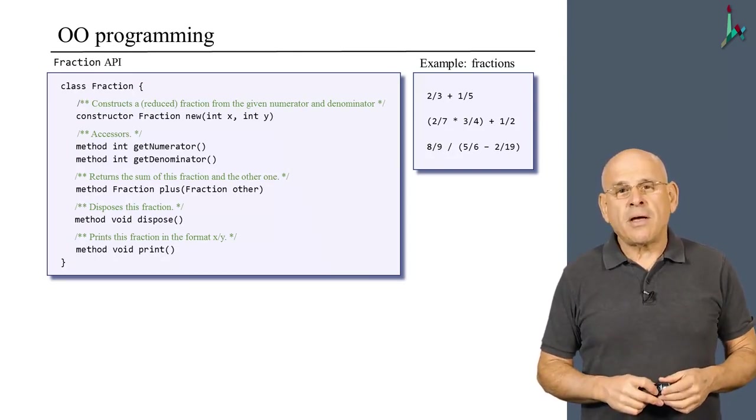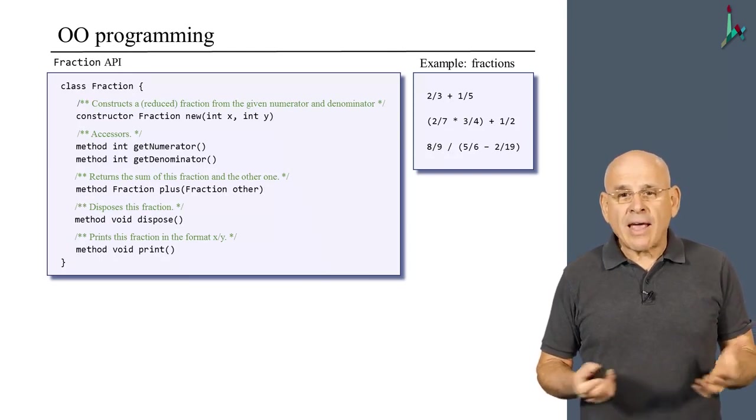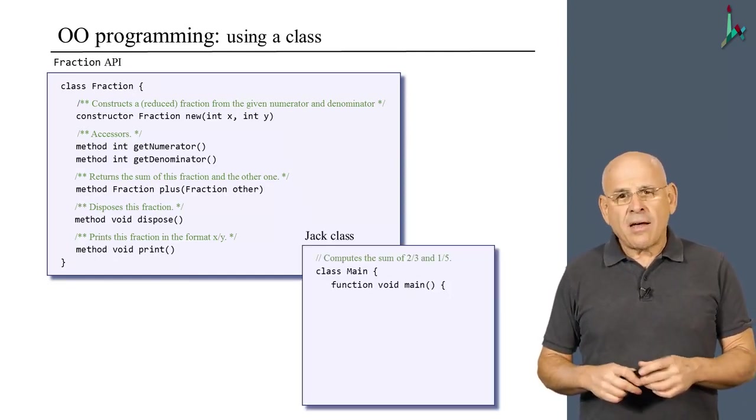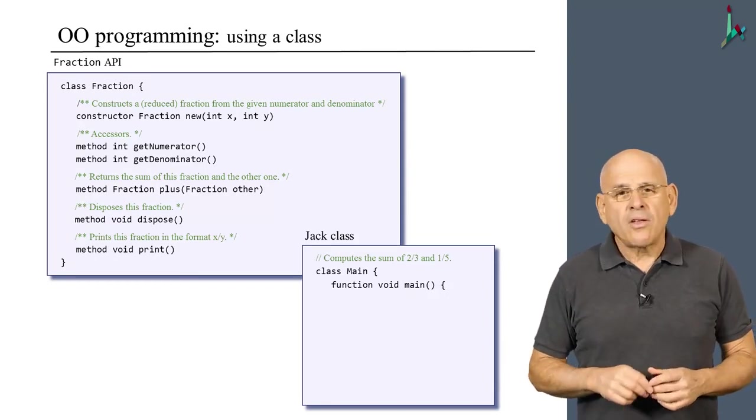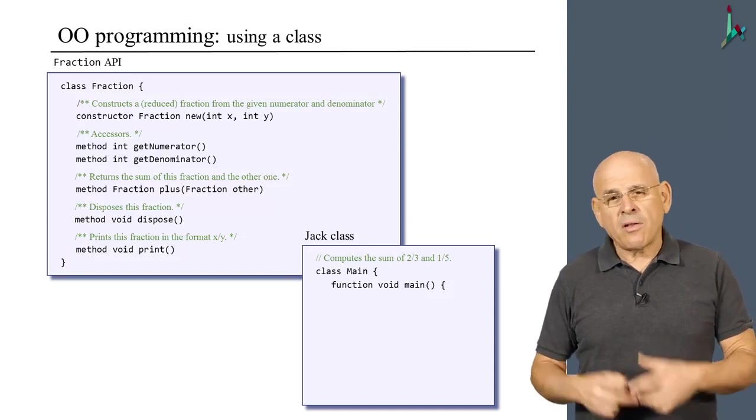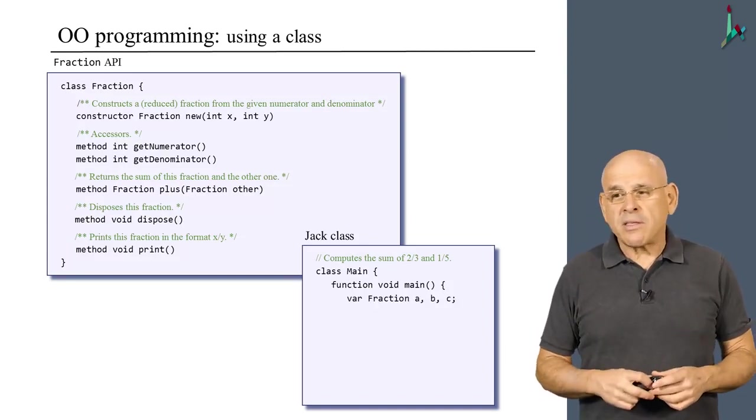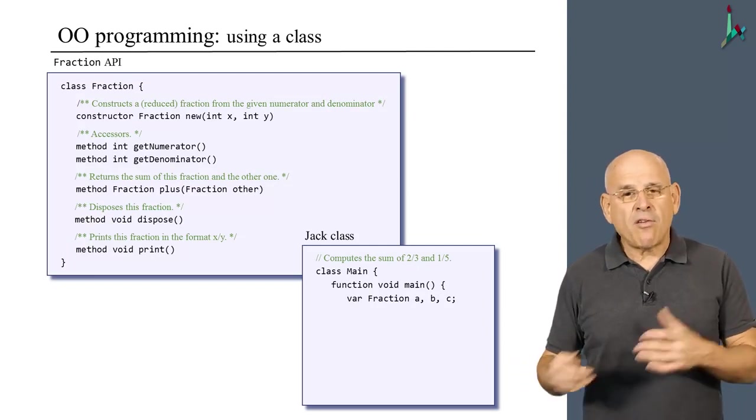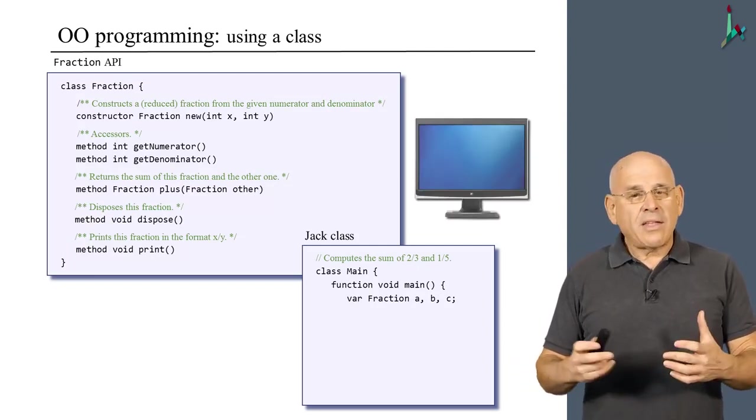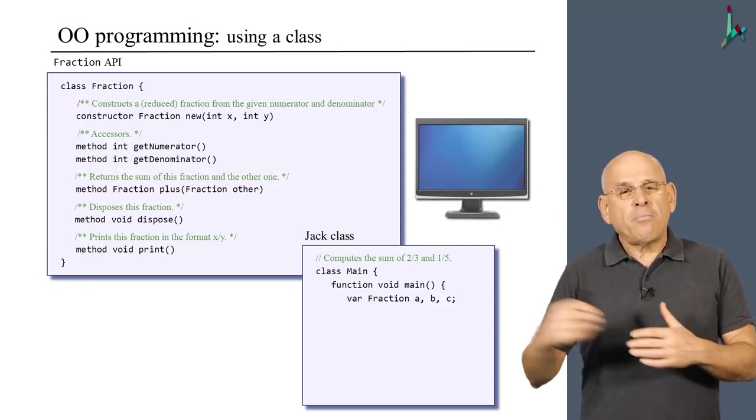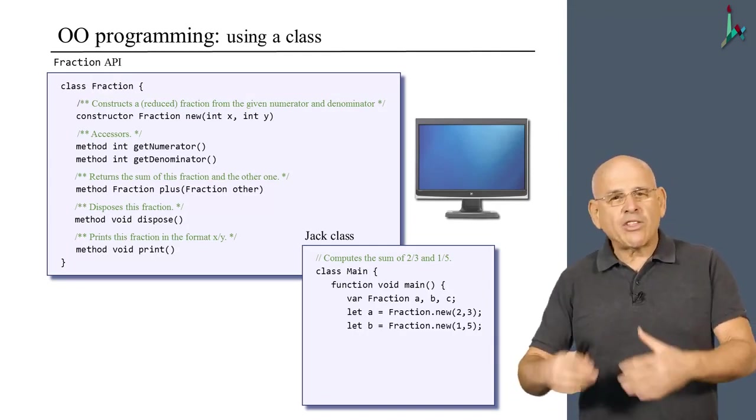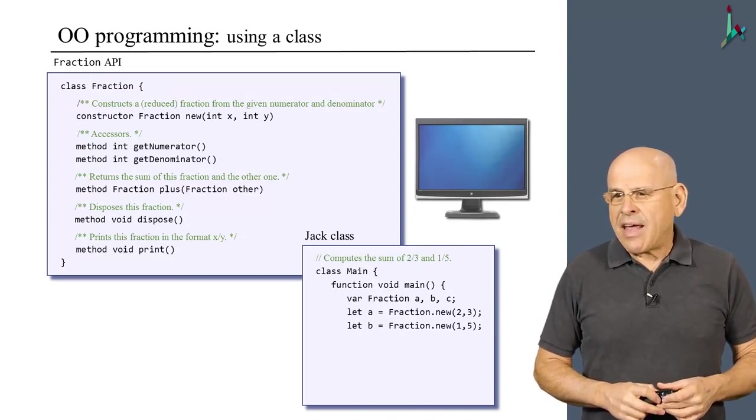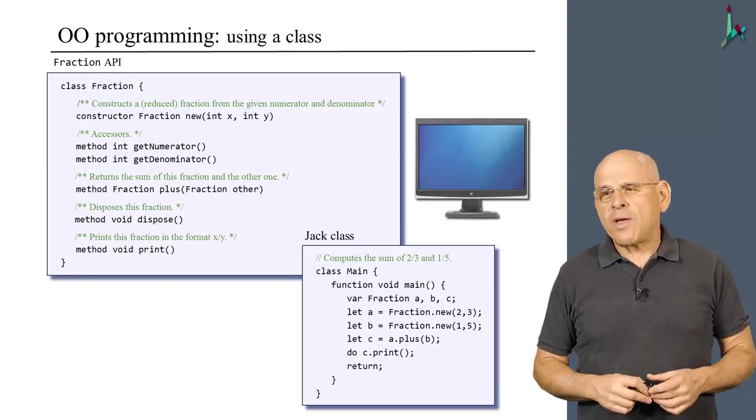All right, so how do you use this API? Well, you need to write some client code. And here's an example of some client code which exists in a separate Jack class. And this program here seeks to add up two-thirds and one-fifth, and it does it as follows. First of all, it creates three pointer variables, or reference variables, or object variables, any one of these terms is correct, a, b, and c, of type fraction. And then it creates two fractions, a and b. A points to the fraction two and three, the fraction characterized by two and three. And b points to the fraction characterized by one and five. And then we do a plus b, we print the result, and we return.